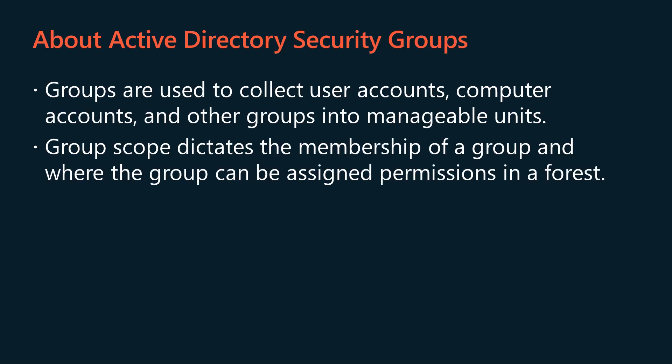You use security groups to assign permissions to resources such as files, folders and shared printers within the Active Directory environment. Security groups allow you to control who can access resources such as shared folders or applications. These groups can be used with access control lists to grant permissions to a resource.